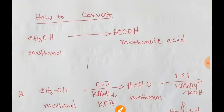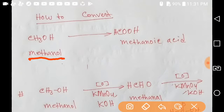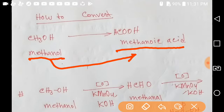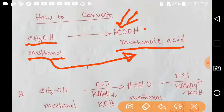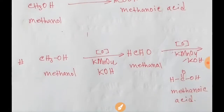Now we'll learn how to convert methanol to methanoic acid. In methanol there is one oxygen, but in methanoic acid there is one more oxygen. So we have to add oxygen — this process is called oxidation. We have to oxidize methanol using an oxidizing agent, which will be potassium permanganate in basic solution.